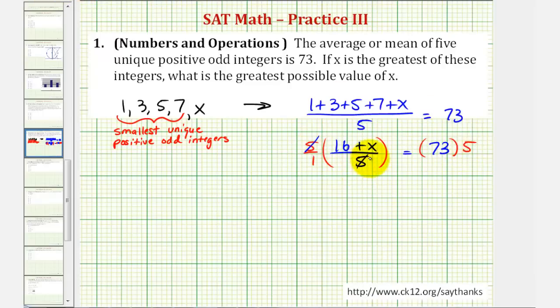Five over five simplifies to one, so we have 16 plus x equals 73 times five, which is equal to 365.